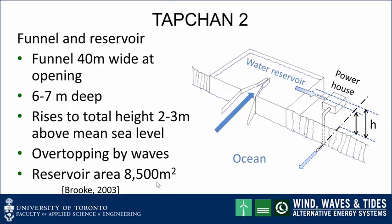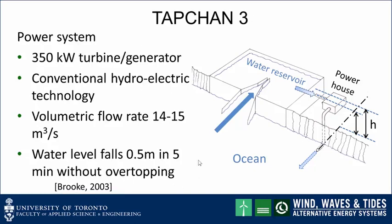The funnel is about 40 meters wide at the opening, 6 to 7 meters deep, and rises to a total height 2 to 3 meters above mean sea level. As waves flow up the channel, they slop over the channel edges into the reservoir. The reservoir area is about 8,500 square meters. The power system consists of a 350 kilowatt turbine generator — very conventional low head hydroelectric technology. The water level falls about half a meter in five minutes without continual overtopping, and the large reservoir smooths out fluctuations that would otherwise occur.